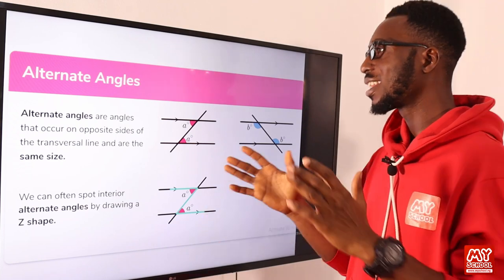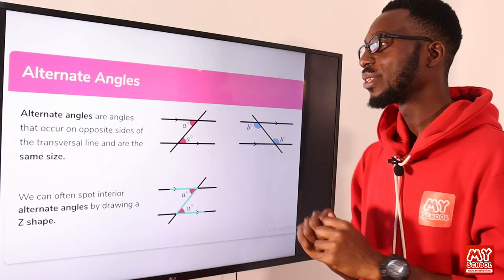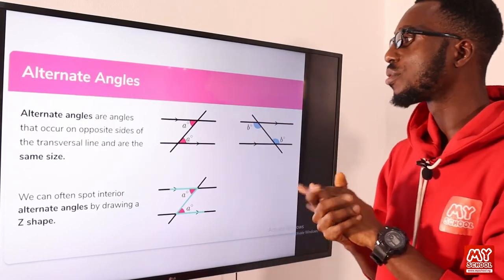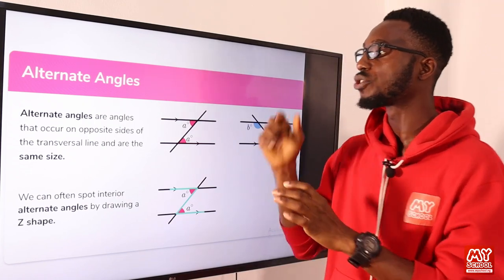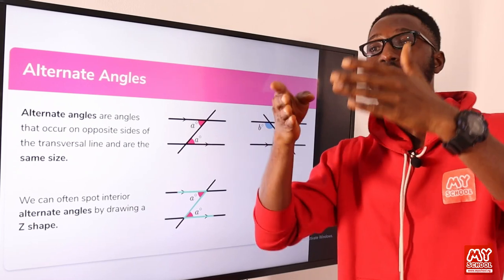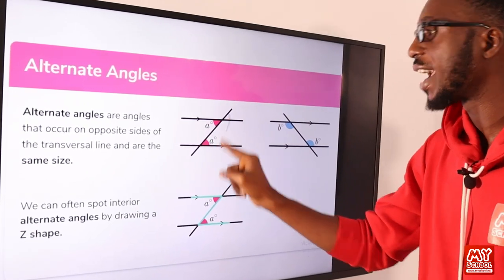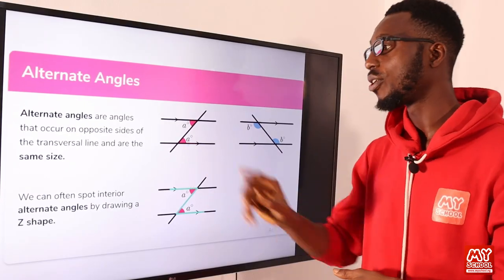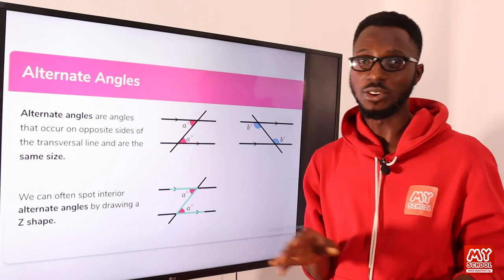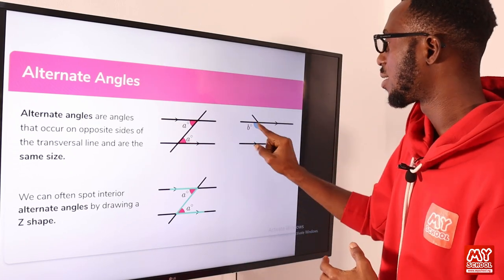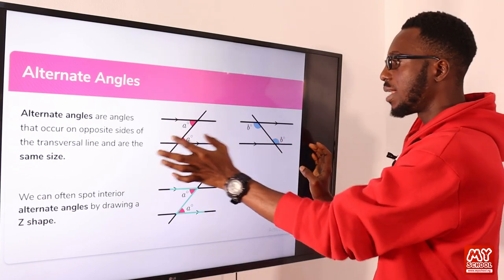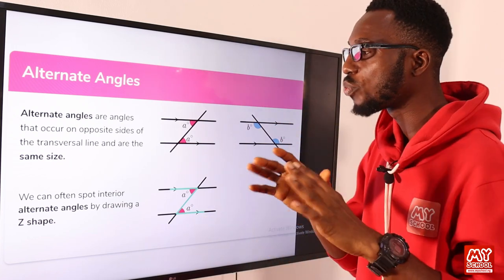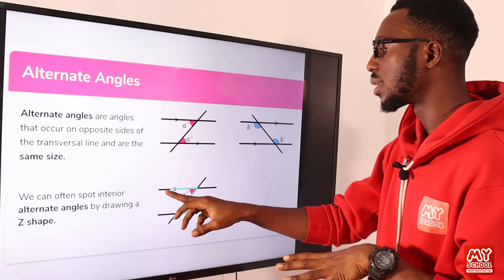We have the alternate angles. Alternate angles can be interior or exterior. Alternate angles are angles that occur on the opposite side of a transversal line — remember that corresponding angles occur on the same side. You can see one angle is on the other side, and they are the same thing — they are congruent. What we have seen is a very good example of alternate interior angles. To identify or spot an alternate angle, you use the Z drawing.